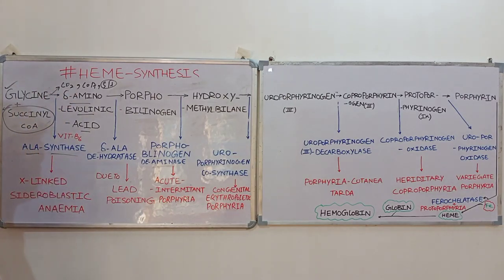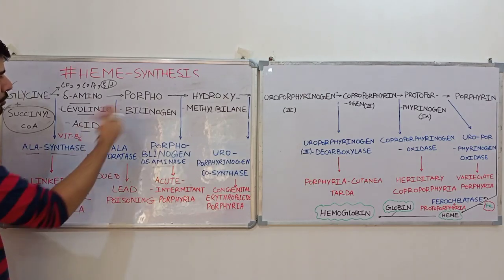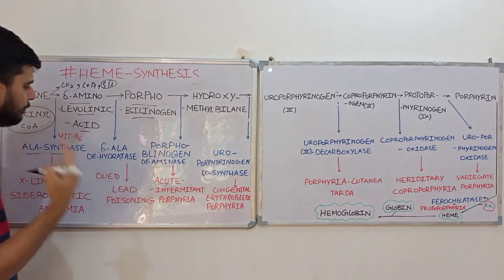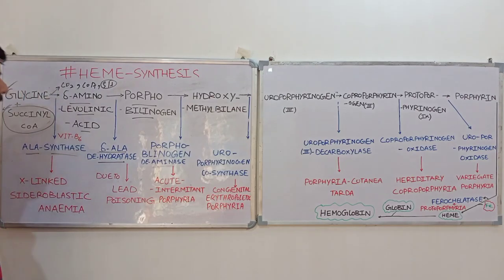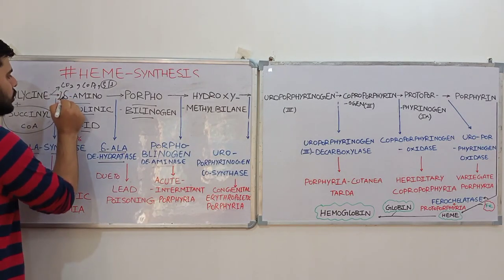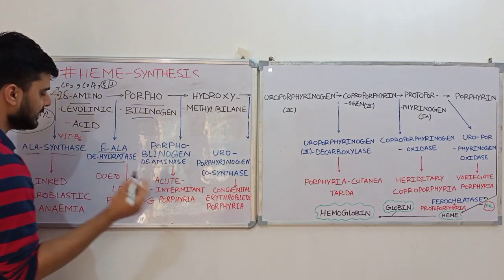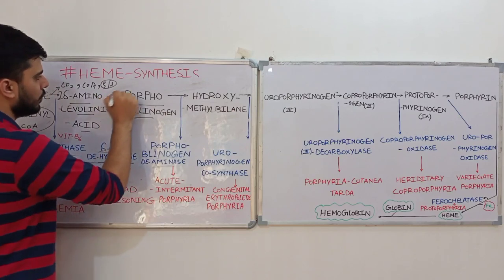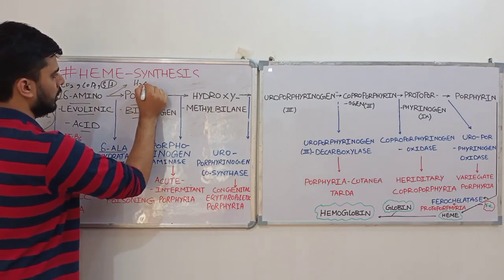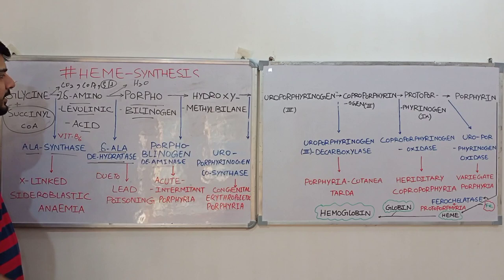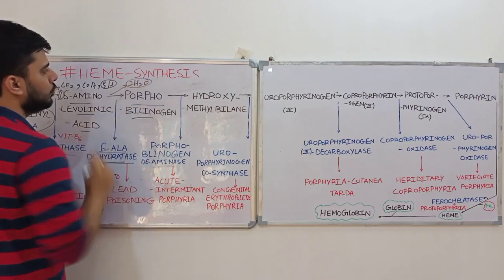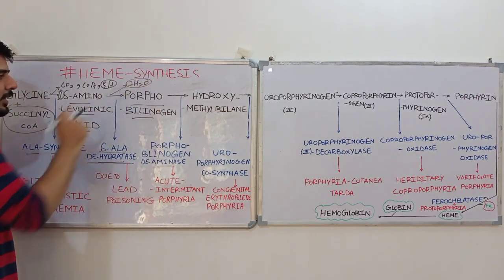The delta-ALA will then be transferred to the cytoplasm, because for its conversion into porphobilinogen we require the enzyme delta-ALA dehydratase, which is present in the cytoplasm. During this step, two molecules of delta-aminolevulinic acid combine and get converted into porphobilinogen. Since the enzyme is a dehydratase, two molecules of water are released — one for each ALA molecule fusing.